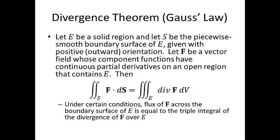The divergence theorem, or Gauss's law, says let E be a solid region and let S be the piecewise smooth boundary surface of E, given with positive or outward orientation. Let F be a vector field whose component functions have continuous partial derivatives on an open region that contains E.